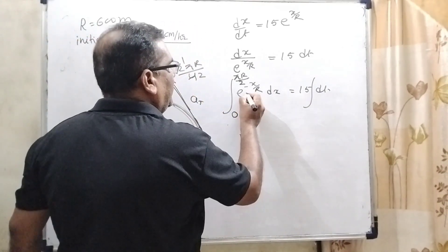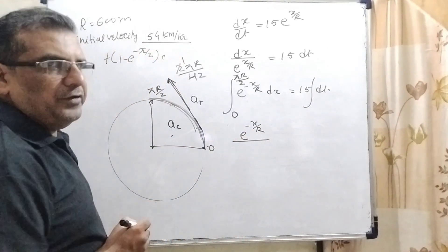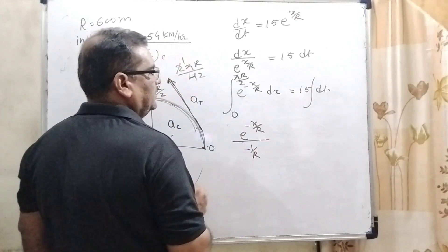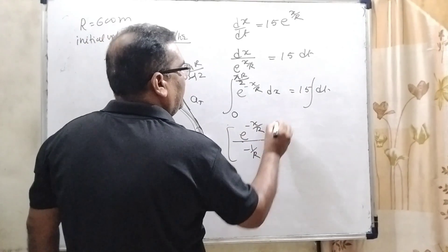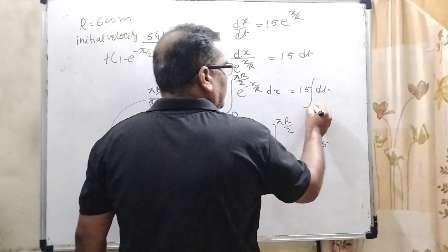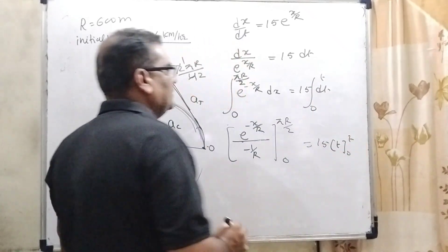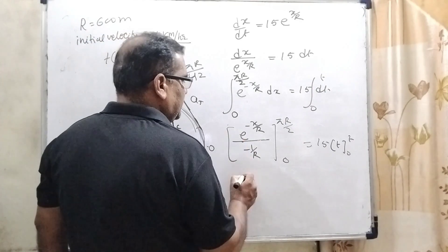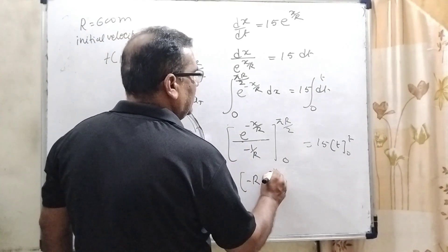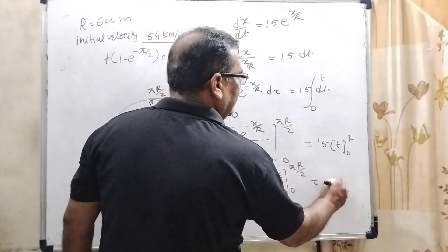Now, ∫e^(-x/r)dx. As we know, in integration, the coefficient is put in the denominator, so -r·e^(-x/r) with upper limit πr/2 and lower limit 0, equals 15t with limits 0 to t. So this becomes -r·e^(-x/r) from 0 to πr/2 equals 15t.